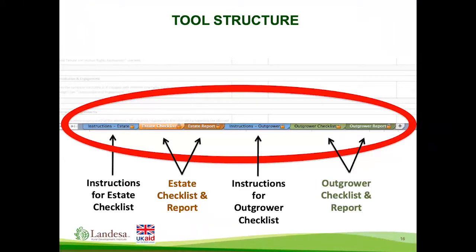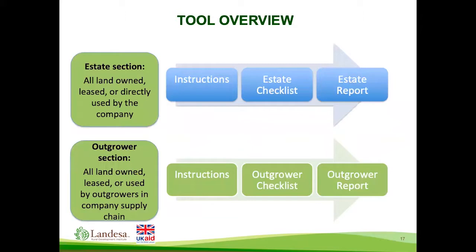The tool is an interactive Excel document containing a number of worksheets. The first tab contains instructions for completing the estate checklist. The second and third tabs are the estate checklist and the estate report. Tab 4 contains instructions for completing the outgrower checklist, and tabs 5 and 6 contain the outgrower checklist and report respectively. The tool is broadly divided into two sections — the estate section and the outgrower section — each providing instructions, a checklist, and a report. These sections mirror each other structurally, with differing questions to address the particular issues that estates and outgrowers present.